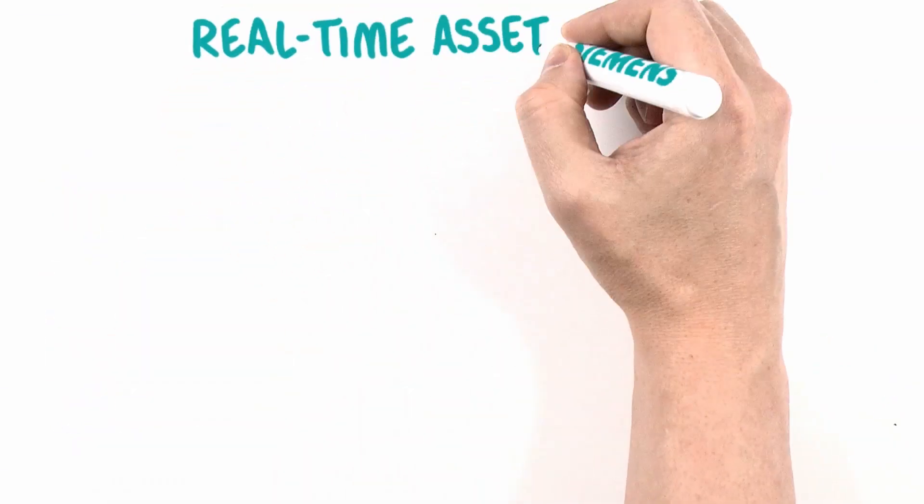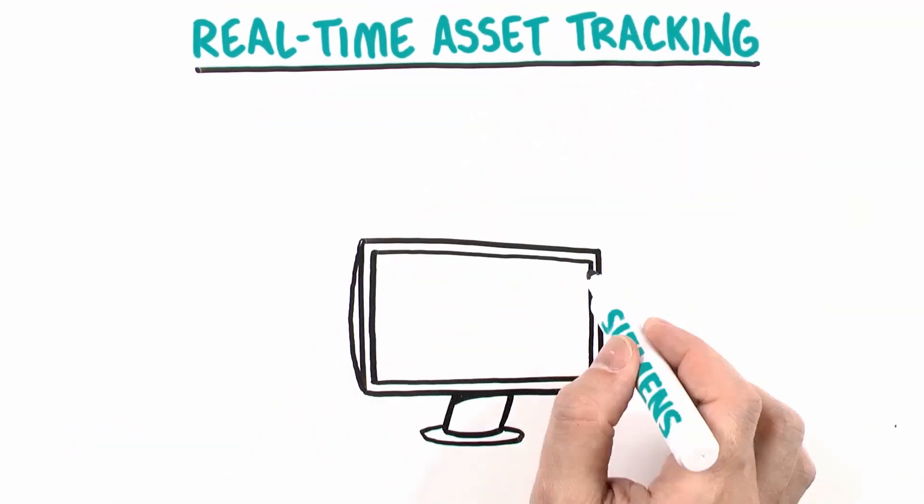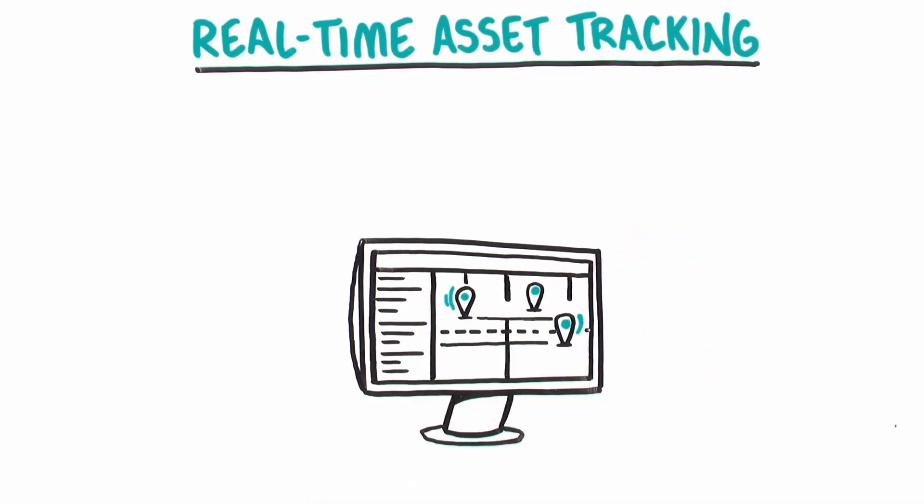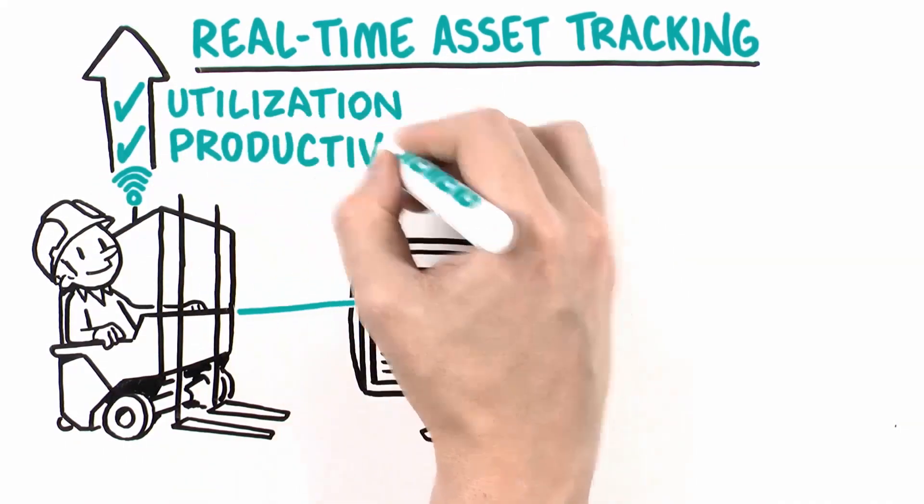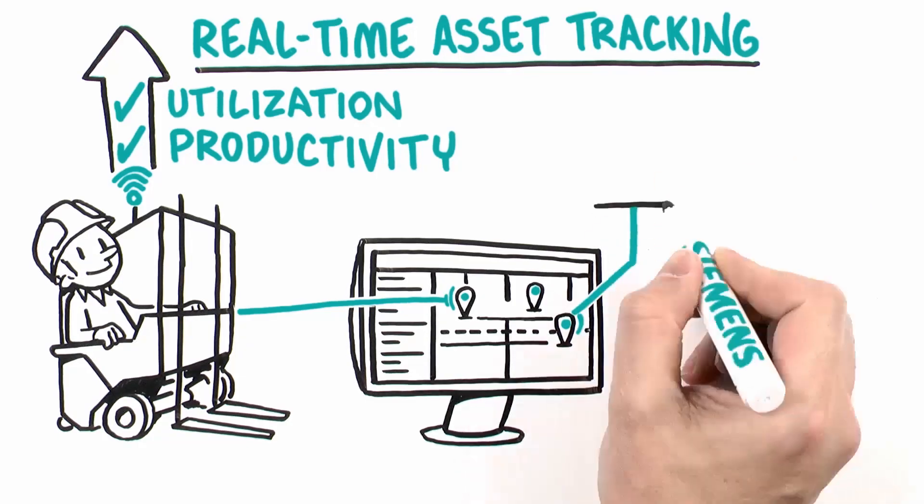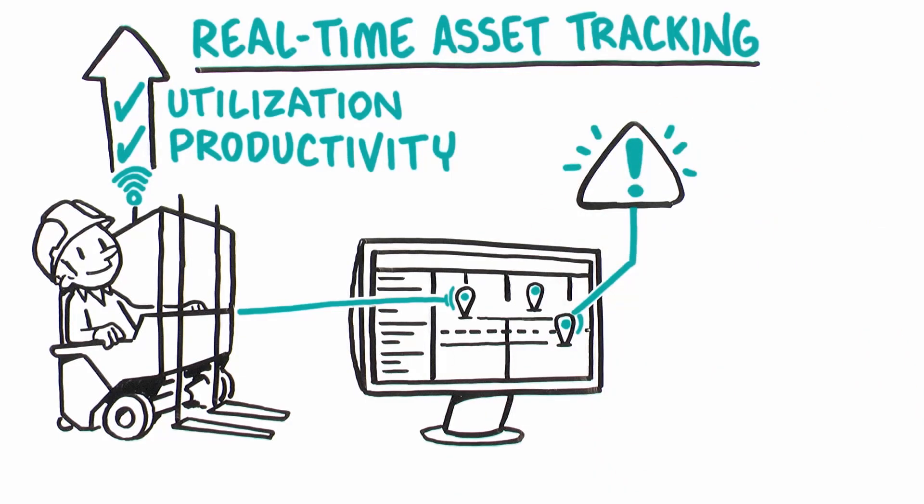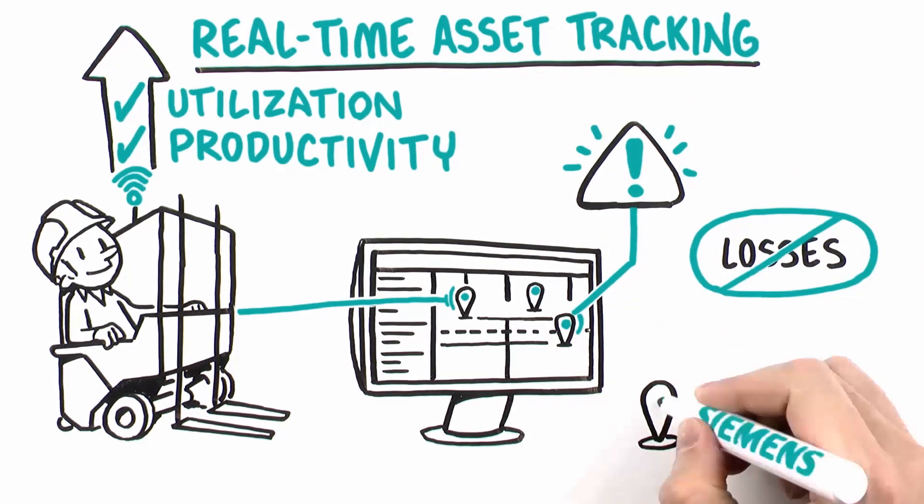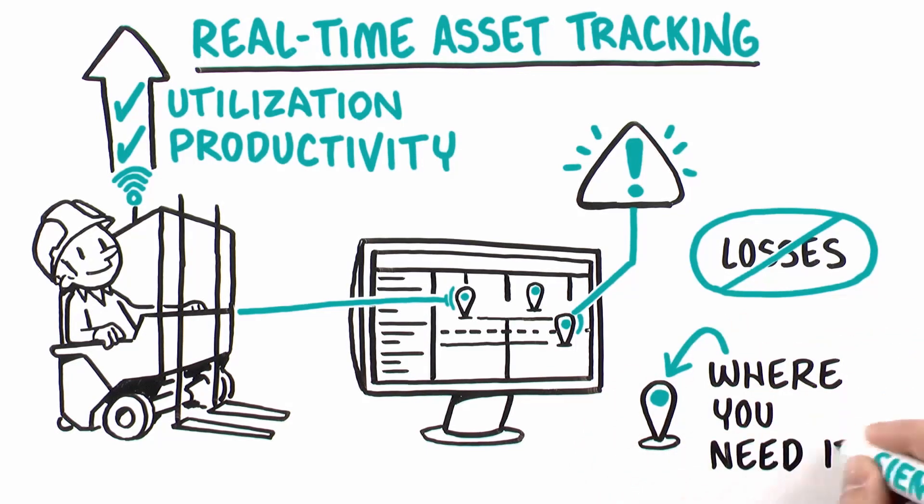With real-time asset-tracking applications, equipment can be located quickly and efficiently, improving asset utilization and worker productivity. Alerts can be triggered if assets leave a specified area, reducing losses and ensuring your equipment is where you need it, when you need it.